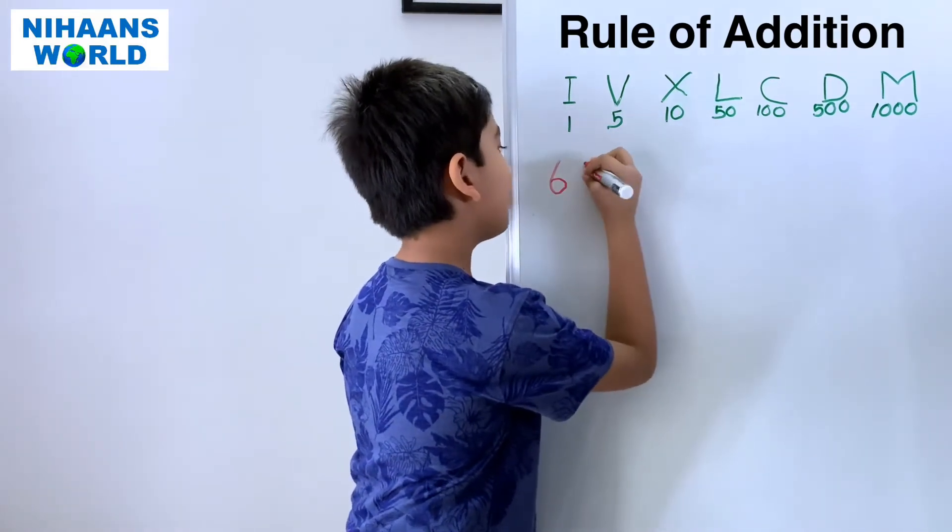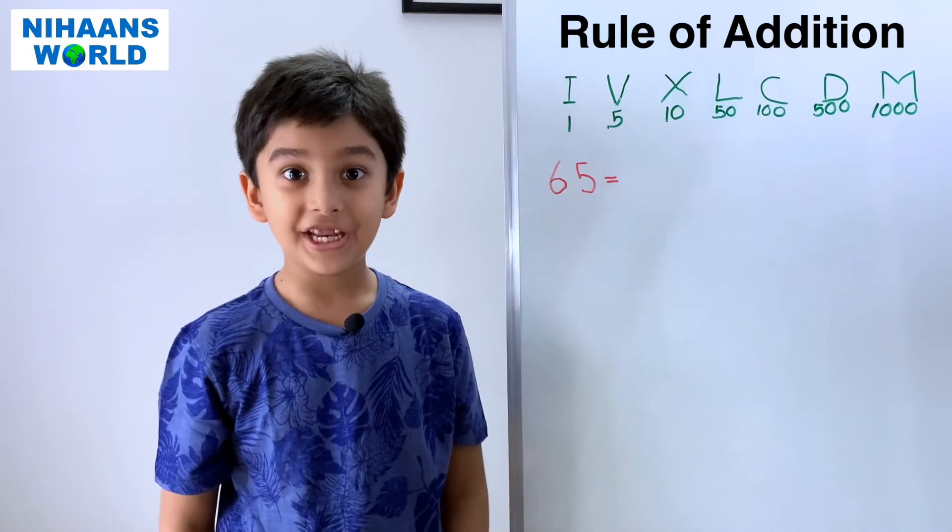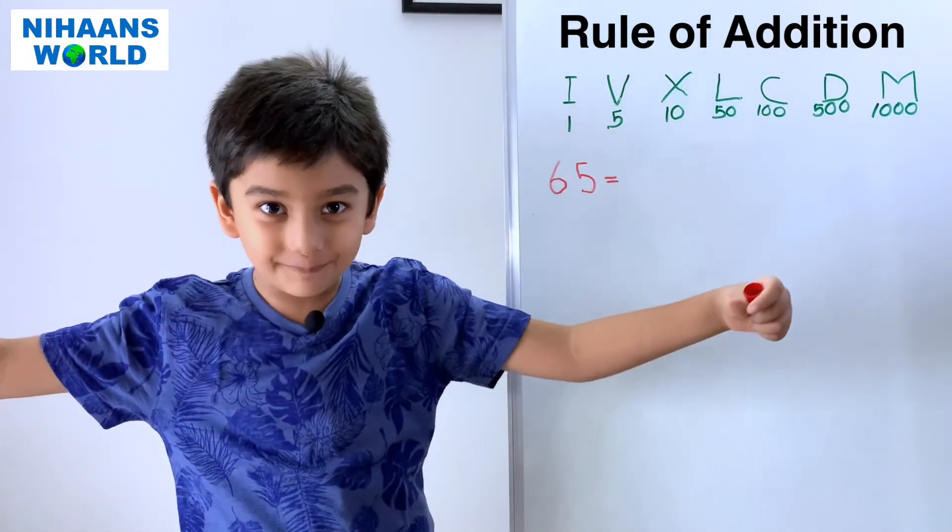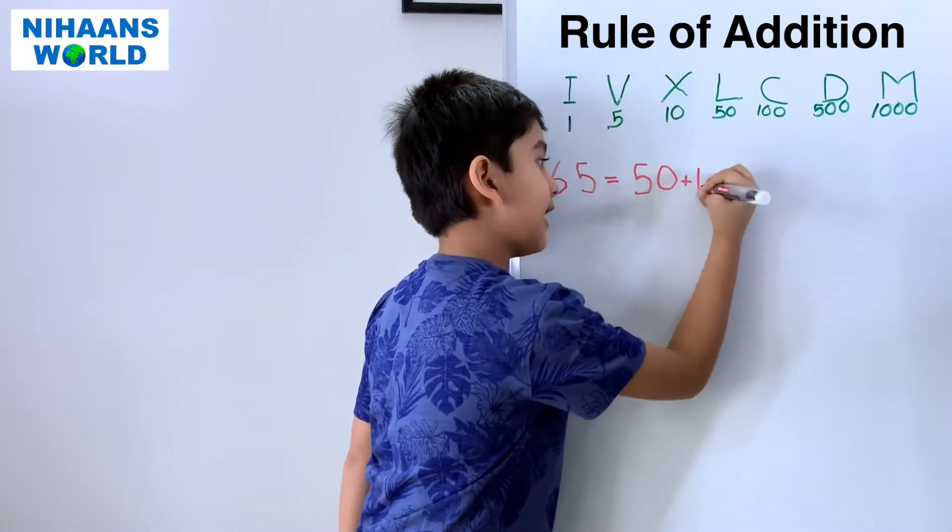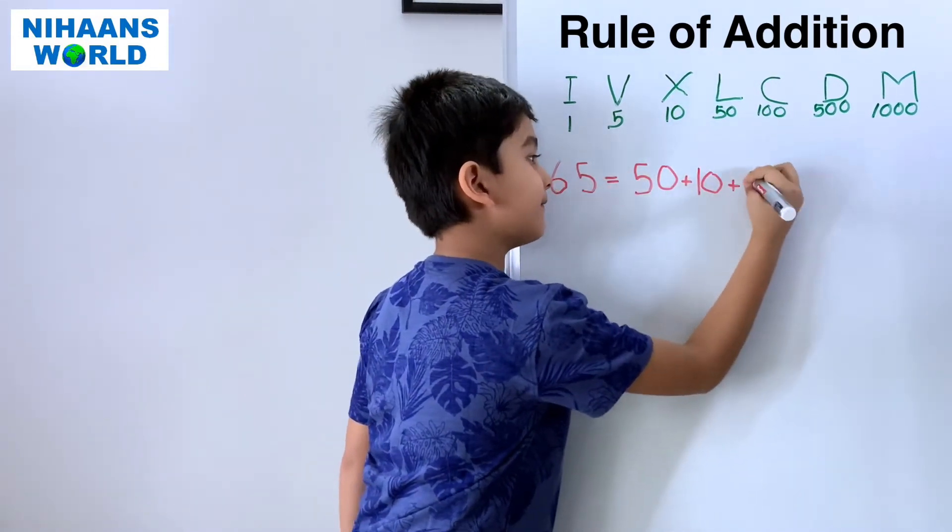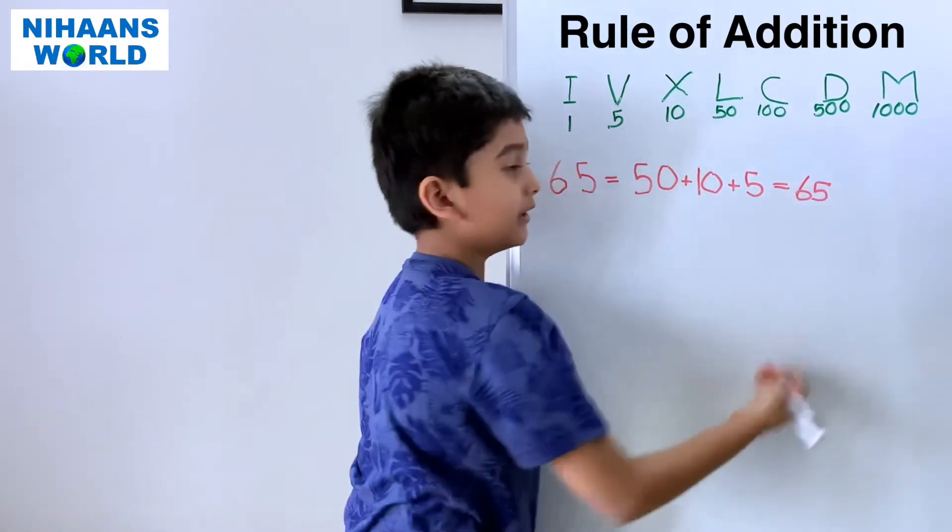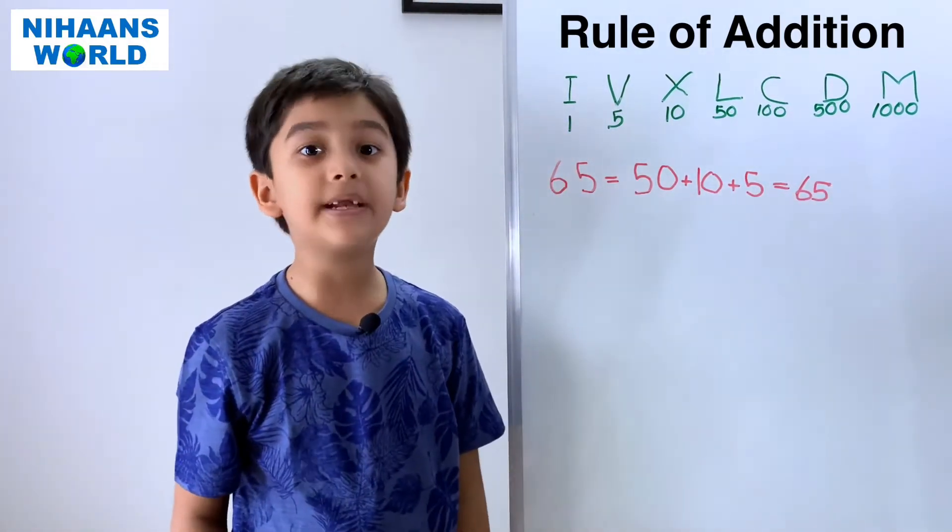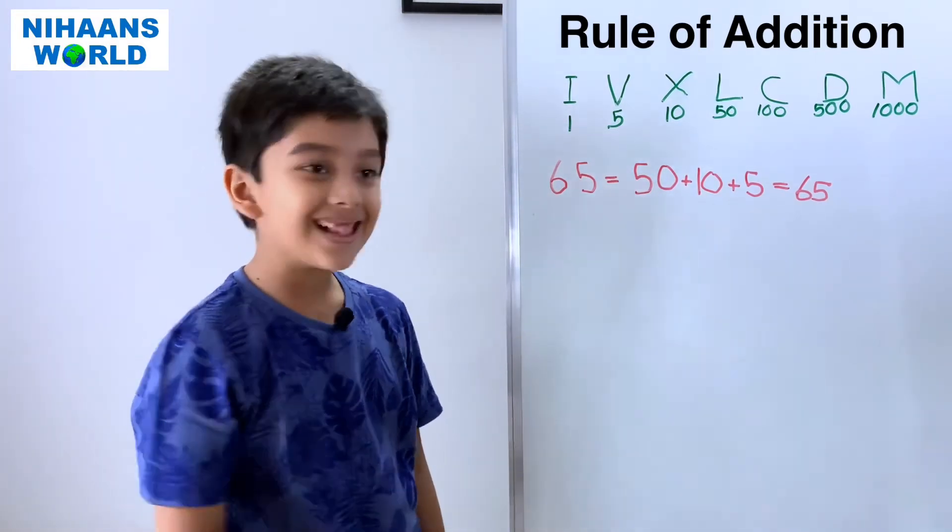Let's do one more example. Sixty-five. So, what do we write sixty-five in expanded form? So, fifty plus ten plus five is equal to sixty-five. Now, let us write in Roman numerals. So, what do we write fifty in Roman numerals? L.